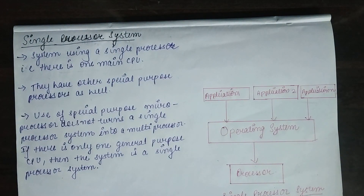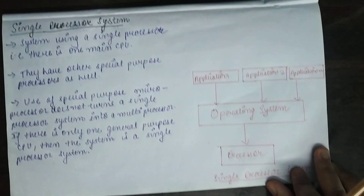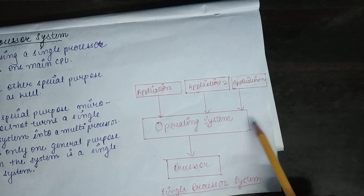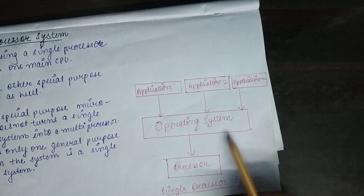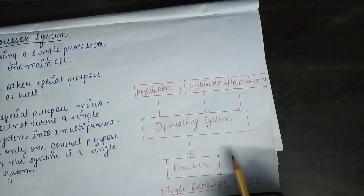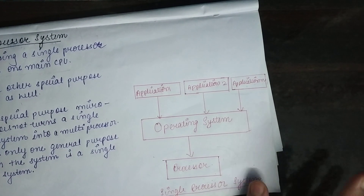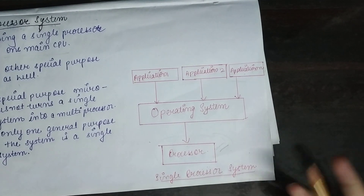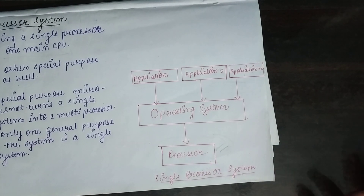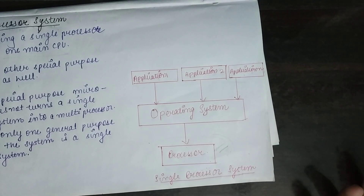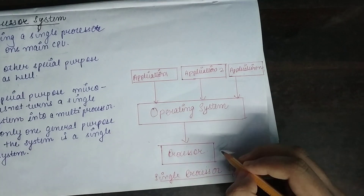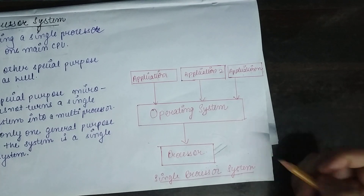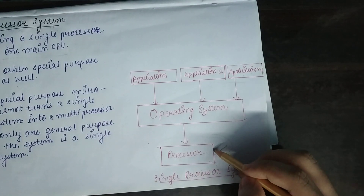Since there is only one general purpose CPU, that processor can execute only one process at a time. Looking at this diagram, we have N number of applications waiting to be executed, but since there is only one processor, it can only run one process at a time. And if that processor fails for some reason, the system will crash because there is only one processor and it has stopped.